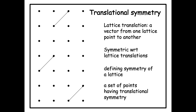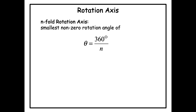Apart from translational symmetry, a lattice can have other kinds of symmetry. One of the important symmetries in this class is a rotation axis. A rotation axis is characterized by its fold. We define a rotation axis as an n-fold rotation axis if the smallest non-zero rotation angle is given by 360 degrees divided by n. Since it is a symmetry rotation, this rotation should bring the lattice into self-coincidence. This definition is true for finite objects also and not only for lattices.